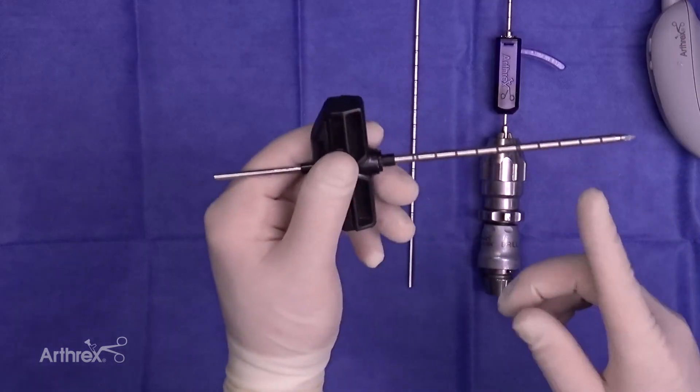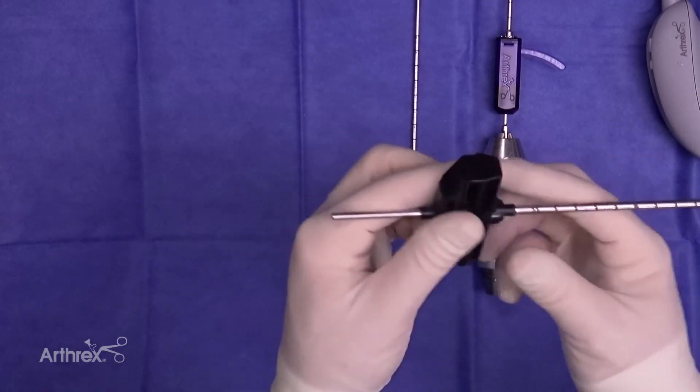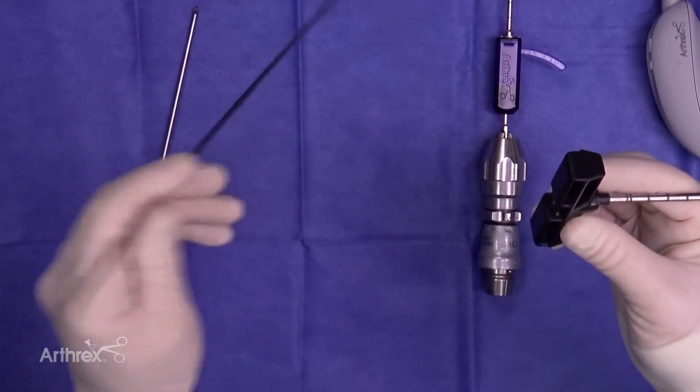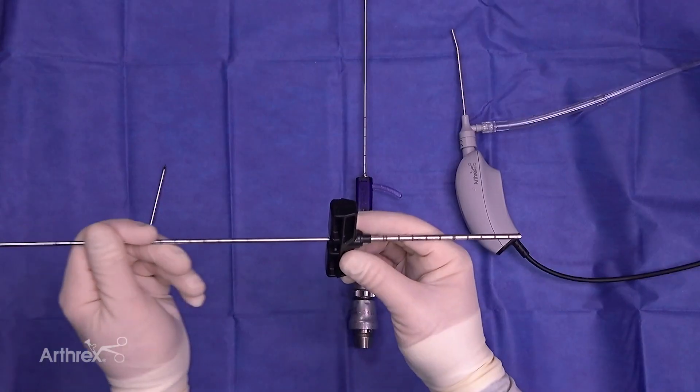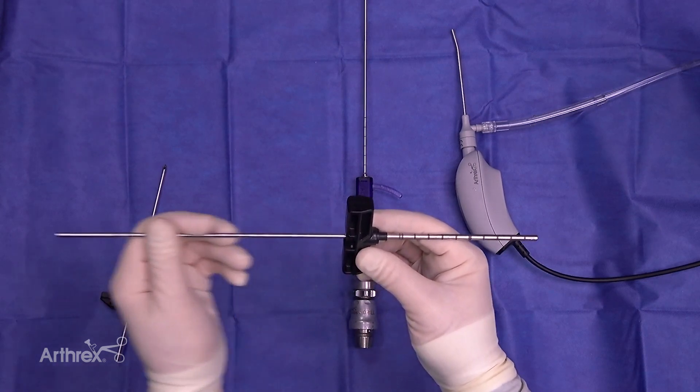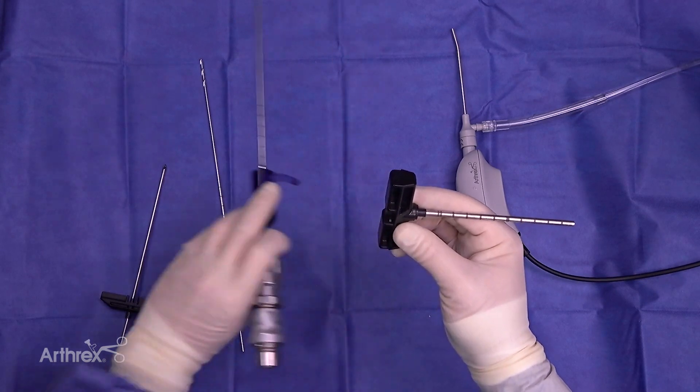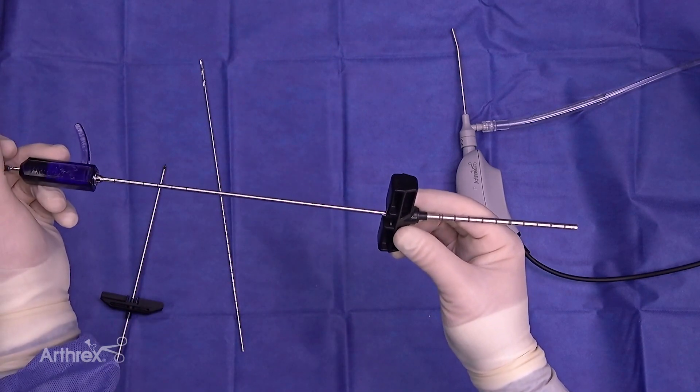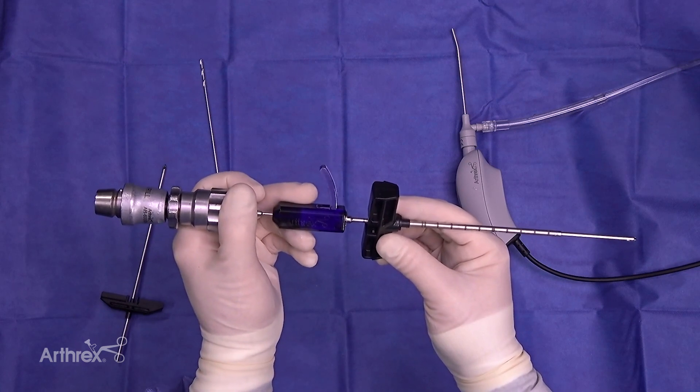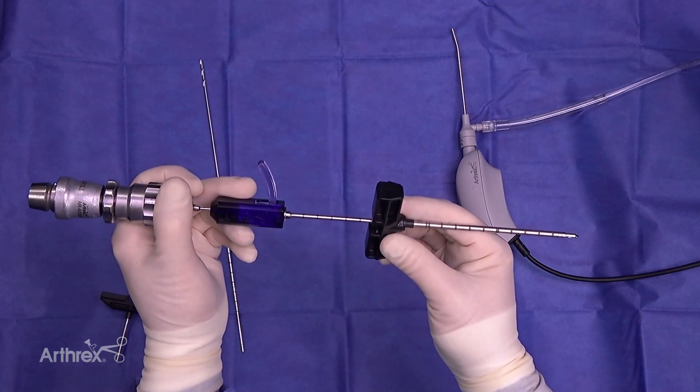So what we're going to show in this example is we're going to place this in about 10 millimeters. We're going to remove the inner stylet and then we're going to drill down to the depth that we want from there to create that initial socket. And then we're going to come in with the decompression device to the depth that we would like, and then we're going to ream back like that.